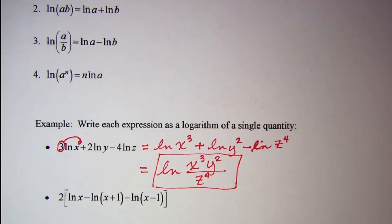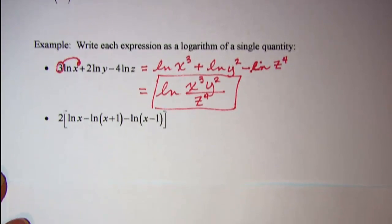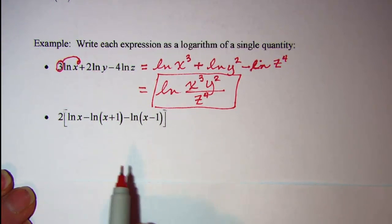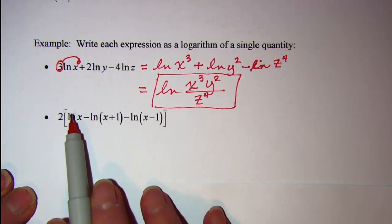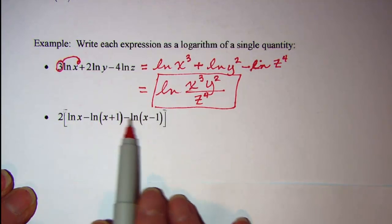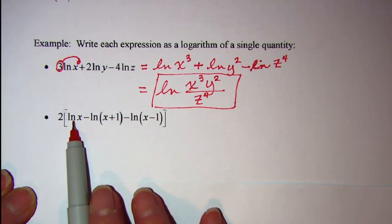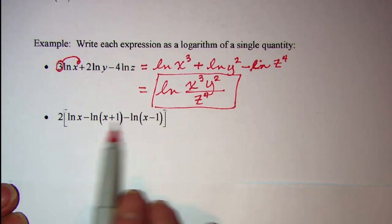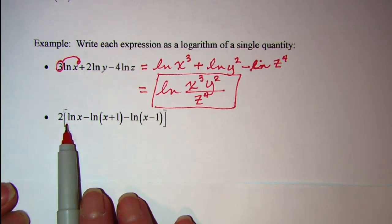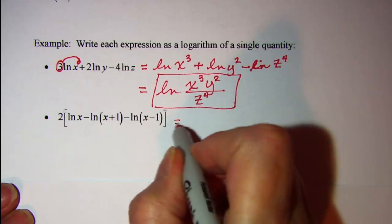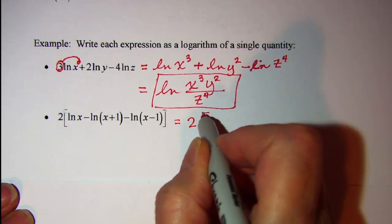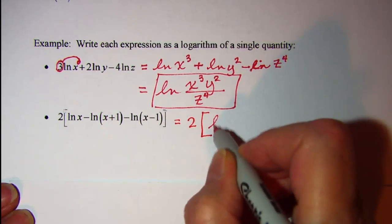Let's do another one. We have 2 multiplied by this, but I think I'm going to go ahead and write this stuff inside the brackets as a single logarithm first. So we have a 2 outside, and then we have ln.